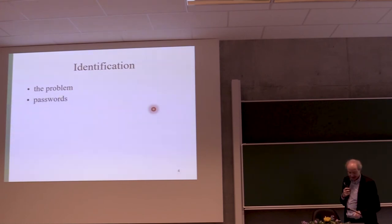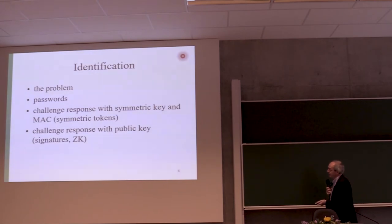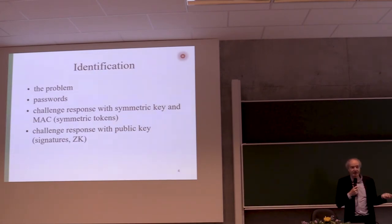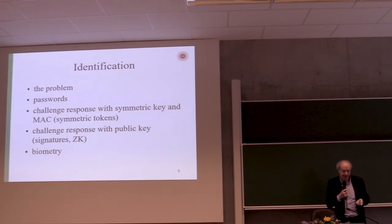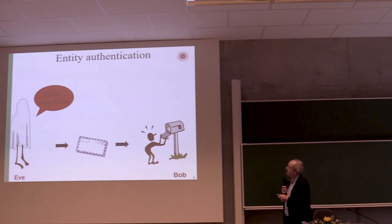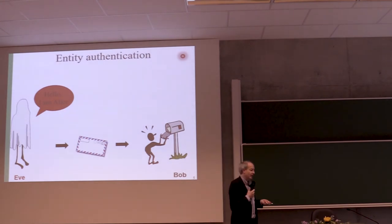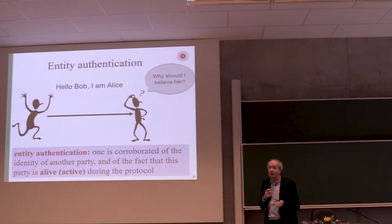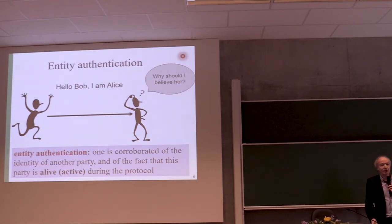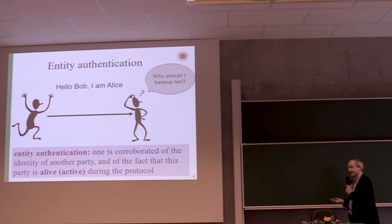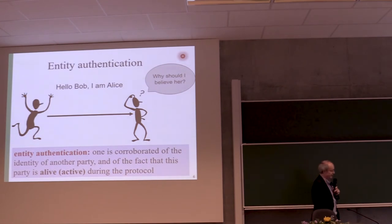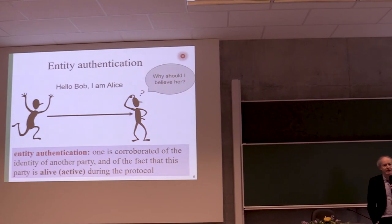We'll look at passwords, challenge-response — which goes back to World War II — with symmetric key, then with public key schemes, and then more advanced schemes being deployed more and more. The problem is very easy: somebody shows up and says 'Hi, I'm Alice,' and the question Bob asks is why should he believe this is actually Alice. This is important if you want to enter a building, withdraw money at the bank, cross a border, or log into a computer or mobile phone. It's very important for users but also for devices — we're going to have 50 billion devices, so how will you keep track of which is which?